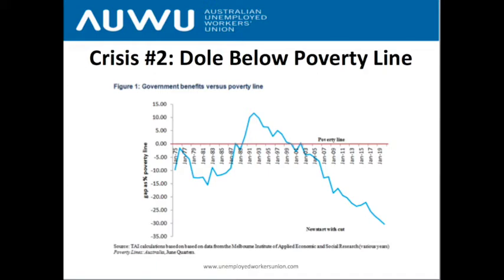Newstart decreased substantially in a very short space of time. It went from being around the poverty line in the late 1980s — actually about 10 percent above the poverty line in the early 1990s — and then went into complete freefall to about 30 to 35 percent below the poverty line. This data was collected by the Australian Institute using figures from the Melbourne Institute, who collect quarterly data on the Henderson poverty line, which we believe is the most reliable measure of poverty.